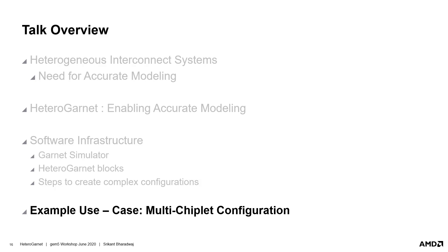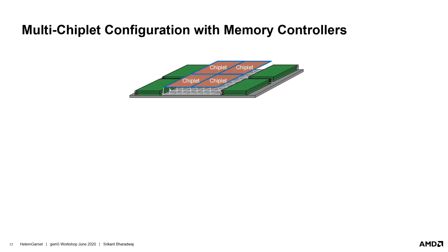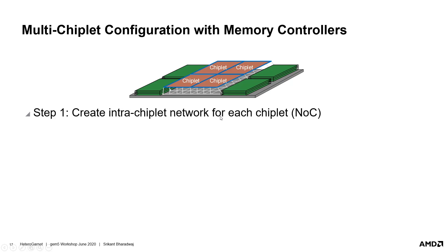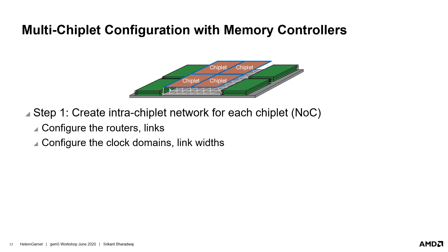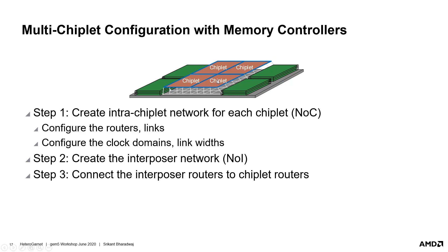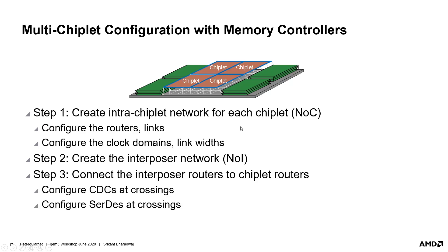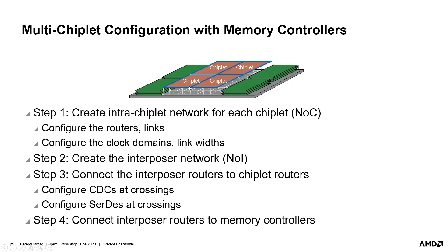Let's see a brief overview of how to build a multi-chiplet configuration. This can easily be done using the flexibility provided by Heterogarnet. Step 1: build the intra-chiplet network for each chiplet — configure clock domains, routers, links, and supplementary units within each chiplet; this can be done once and duplicated for other chiplets. Step 2: create the network in the interposer similarly. Step 3: connect the interposer network and chiplet networks using links with CDCs and SerDes enabled at appropriate places. Step 4: connect the interposer network routers to the memory controllers. All of this can be done through a single Python topology file, with individual components easily configured by setting the right parameters directly.